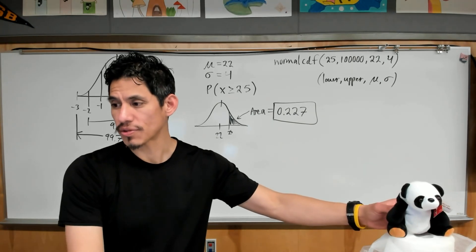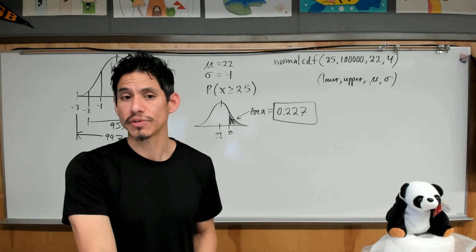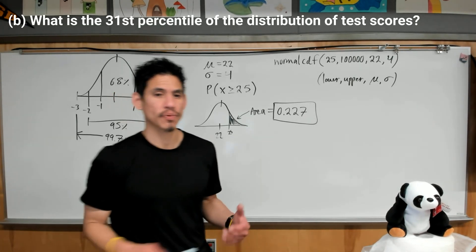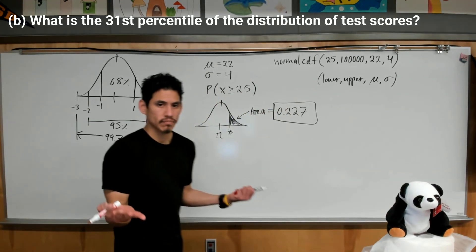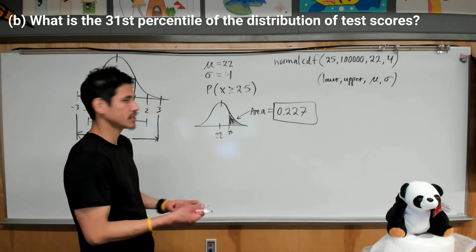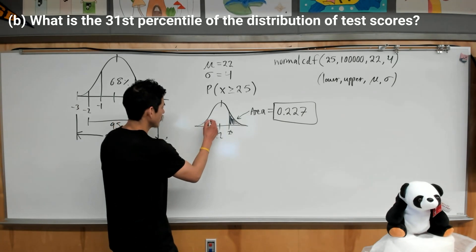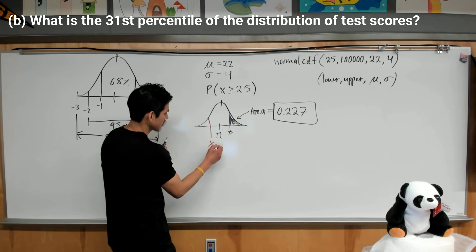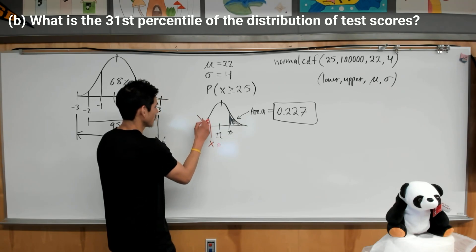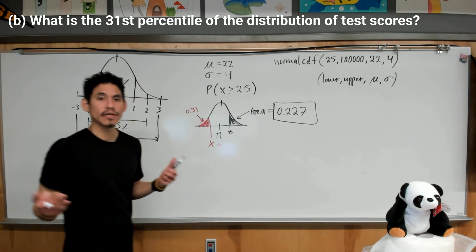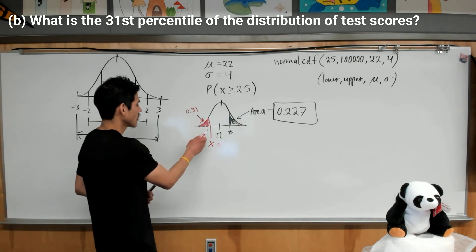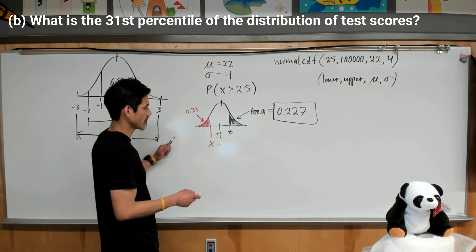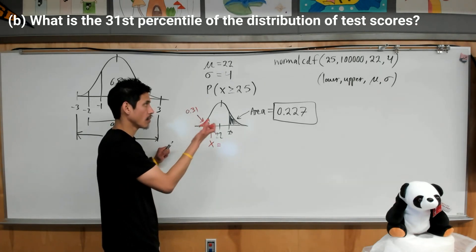Alright, Part B. What's the 31st percentile of the distribution of test scores? So remember what a percentile is. Percentile is kind of like the opposite we just did. It's still just an area. So you want to find the value of X such that there's 31% or an area of 0.31 to the left of it, because that means that the students scored more than 31% of the other students. So we want to find the value that would work here.